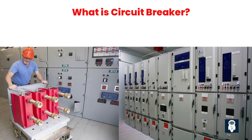A circuit breaker is a device that interrupts the flow of electricity when an electrical fault is detected. This helps prevent equipment damage, fires, and other dangerous situations caused by electrical failures. Circuit breakers require human intervention to reset them after a fault has occurred. They are typically used to protect against overloads, short circuits, and ground faults, and are available in low, medium, and high voltage types.